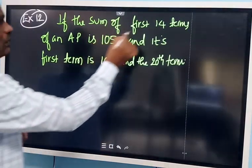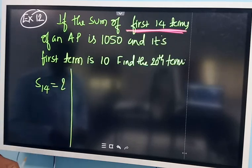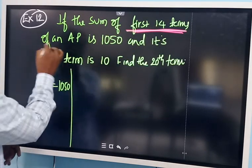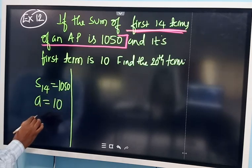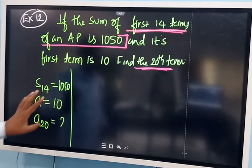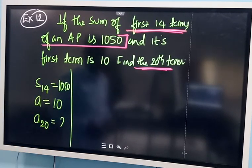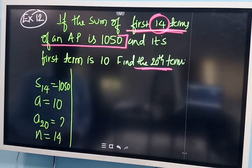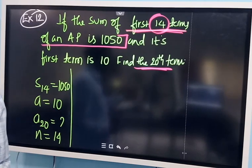The next question: the sum of the first 14 terms is given as 1050, and the first term A is 10. We need to find the 20th term. So S14 equals 1050, N equals 14, A equals 10. We need A and D to calculate any term, so let us use the sum formula: SN = N/2 × (2A + (N-1) × D).